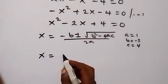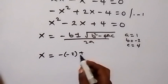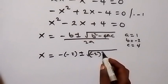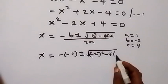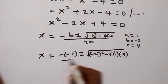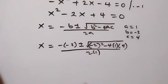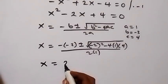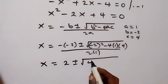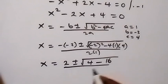So when we substitute here, we have x equals to minus minus 2 plus or minus square root of minus 2 squared, then minus 4 times 1 times 4, all over 2. This gives us x equals to 2 plus or minus square root of 4 minus 16 over 2.